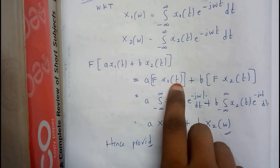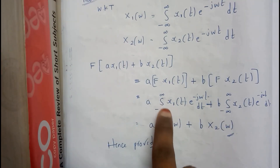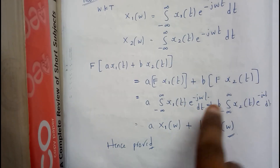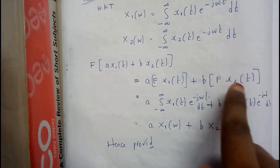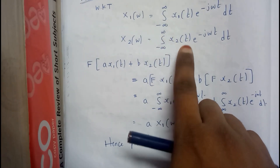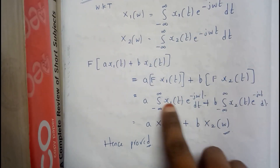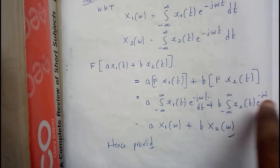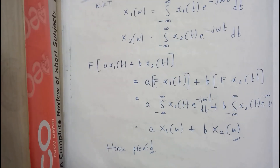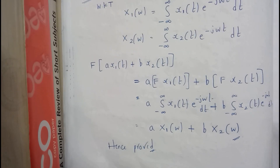The Fourier transform of x1(t) is X1(ω), which is the integral from minus infinity to infinity of x1(t)·e^(−jωt) dt, plus B times the Fourier transform of x2(t), which is the integral from minus infinity to infinity of x2(t)·e^(−jωt) dt. This whole part can be written as X1(ω) and this whole part as X2(ω). Hence we have proved the linearity property of Fourier transform.